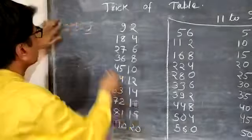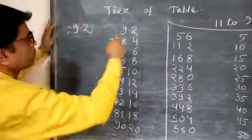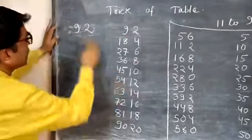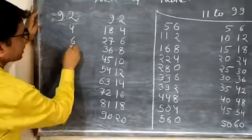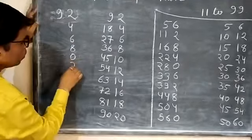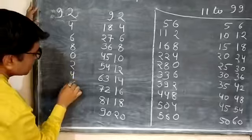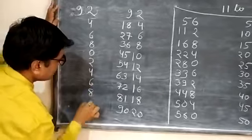Now take all the ones place number. Now what table will we write? 92. Ones place number we will write. See: 4, 6, 8, 0, 2, 4, 6, 8, then 0.